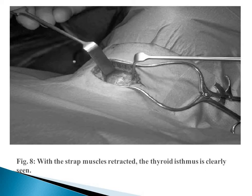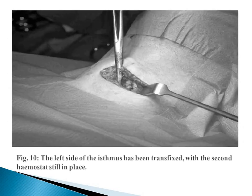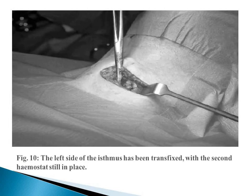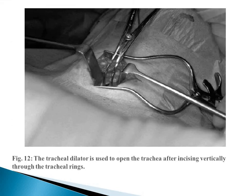After giving the vertical incision through the strap muscles, the thyroid isthmus is clearly seen. Two hemostats are placed and the left side of the isthmus is transfixed. The tracheal rings and the cricoid cartilage are then clearly identified. The tracheal dilator is used to open the trachea after incising vertically through the tracheal rings.